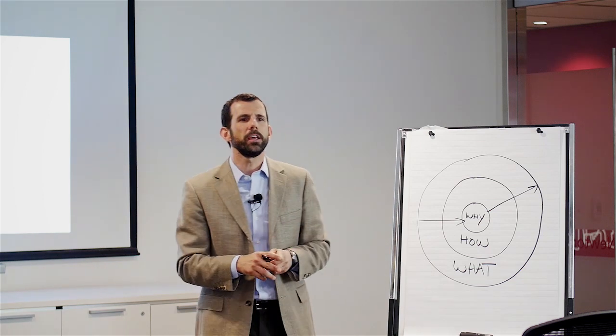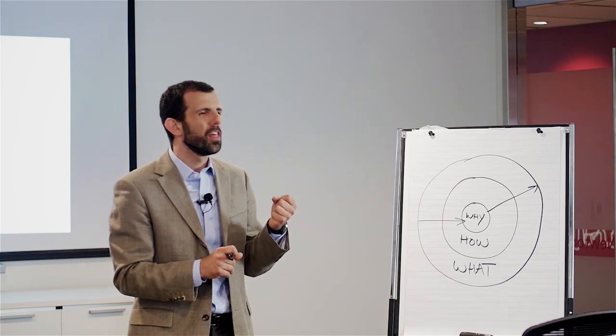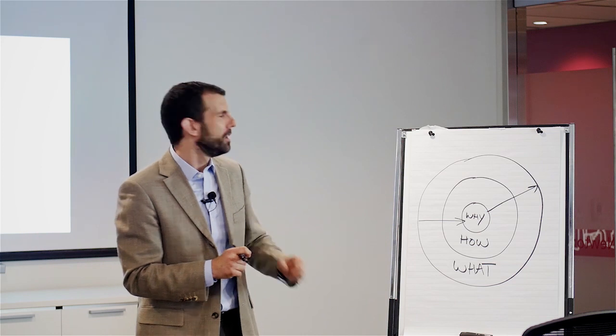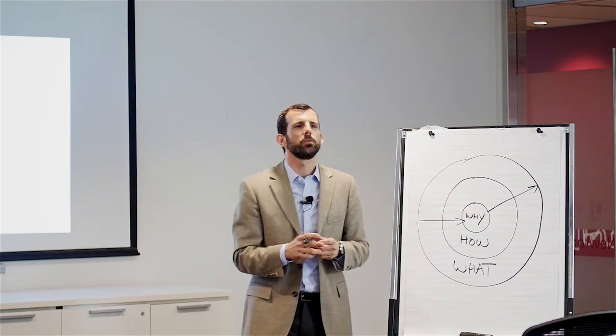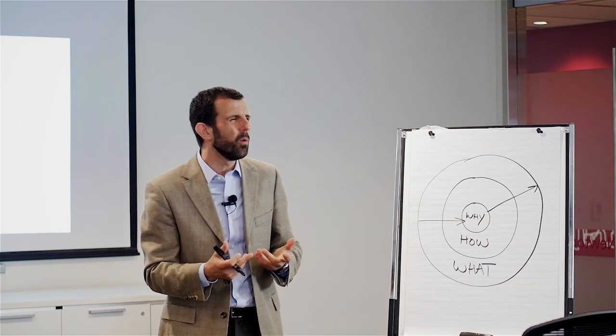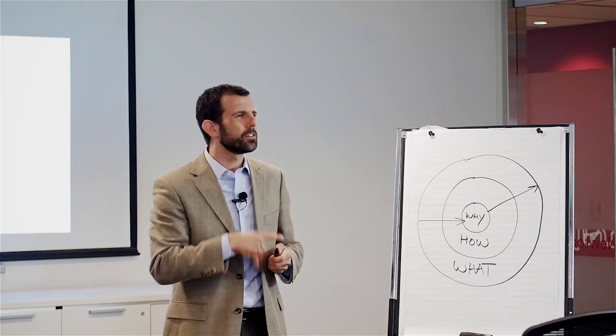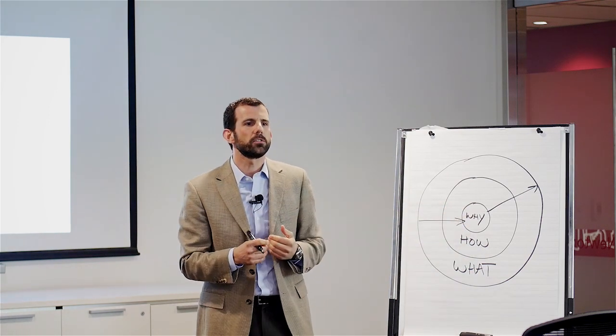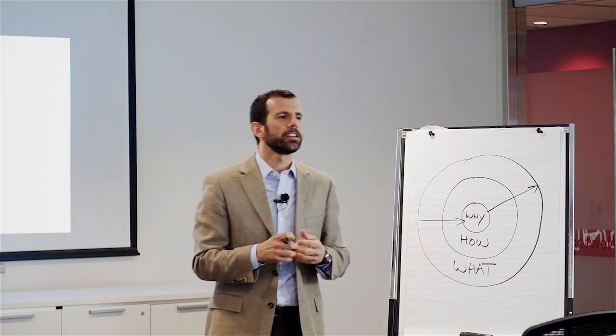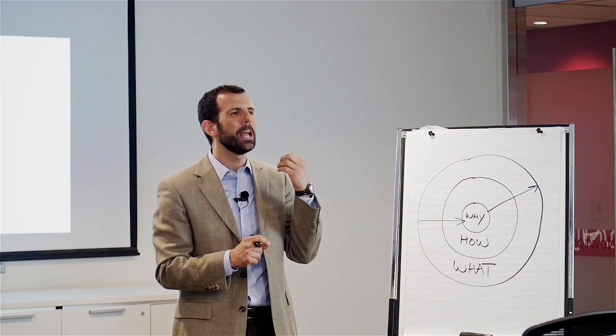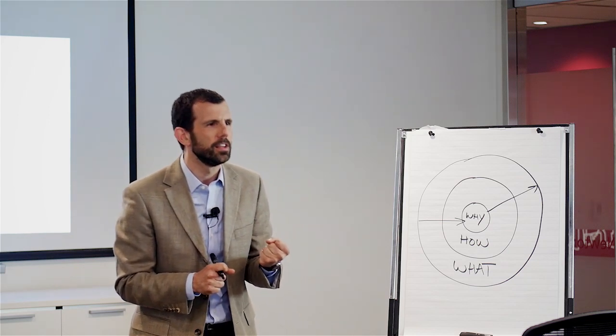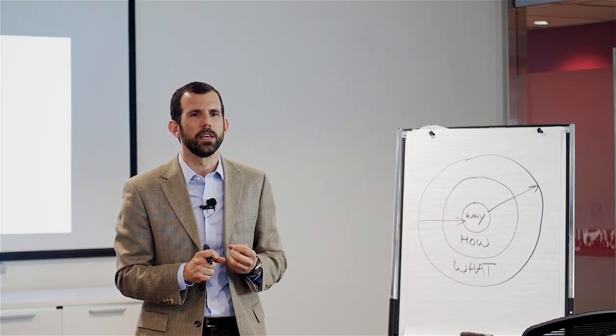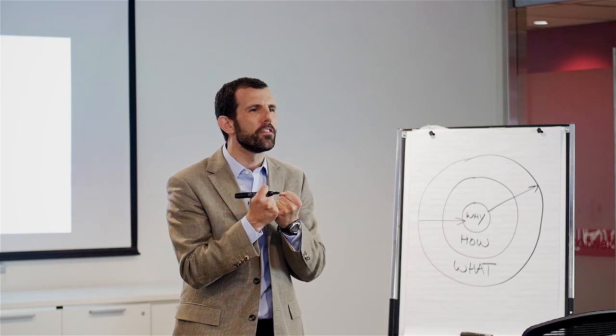This is the brain that corresponds with the what level. This is the part of the brain that's responsible for all analytical thought, rational thought, and language. Now the middle portions correspond to our limbic brain. This is like our lizard brain, our old brain. This is the part of the brain that controls and is responsible for all of our emotions, like trust and loyalty. It also drives all behavior, all decision making, and has no capacity for language.